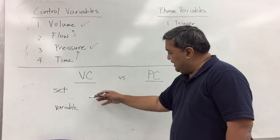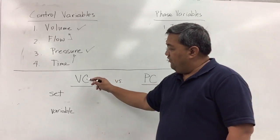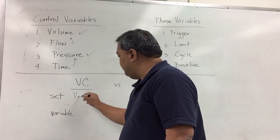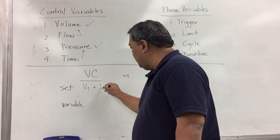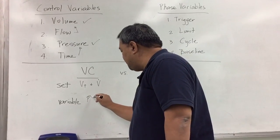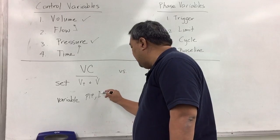So if we're going to put that here, volume control versus pressure control. Volume control, what's set is your tidal volume and your flow. And the variable is your pressure or your peak inspiratory pressure and your I time.